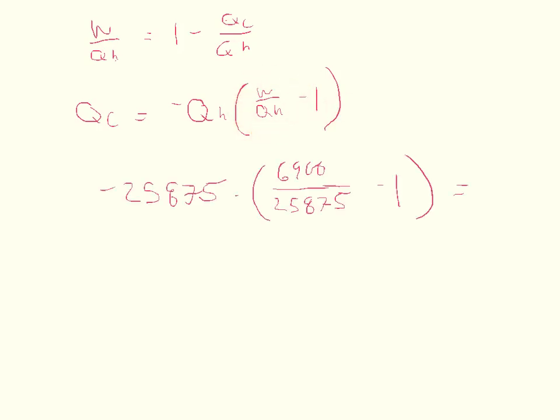And so all we got to do is plug in our numbers. Negative QH is negative 25,875 joules, that's what we calculated in part A. And this is every second, or every cycle. And then we calculated the work done in that second was 6,900, so we divide that by QH, and we subtract 1.